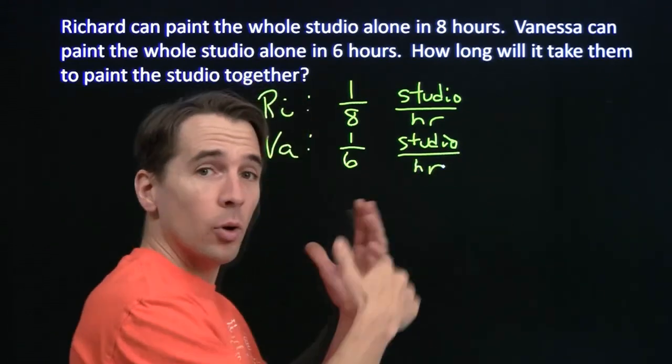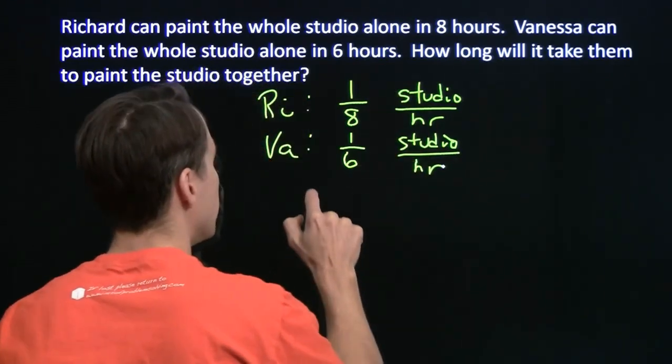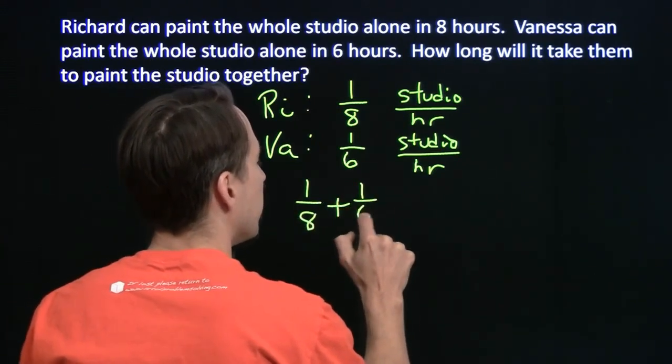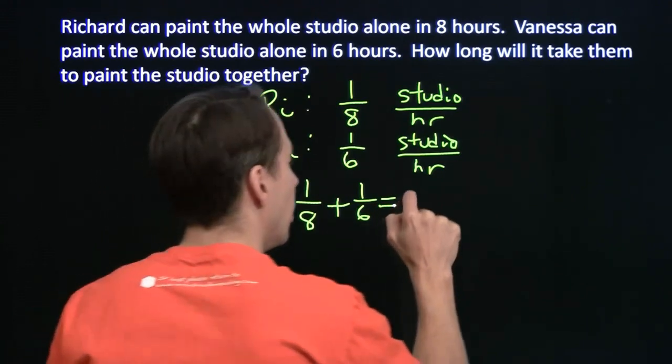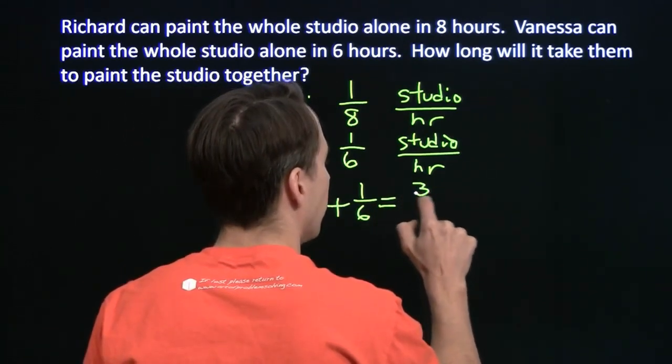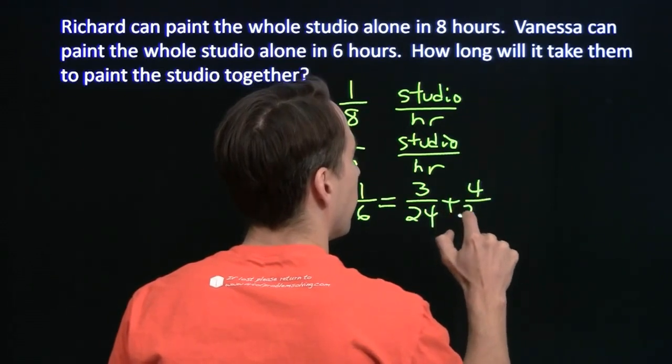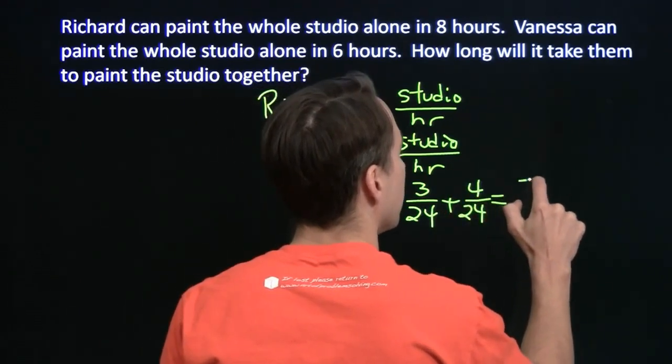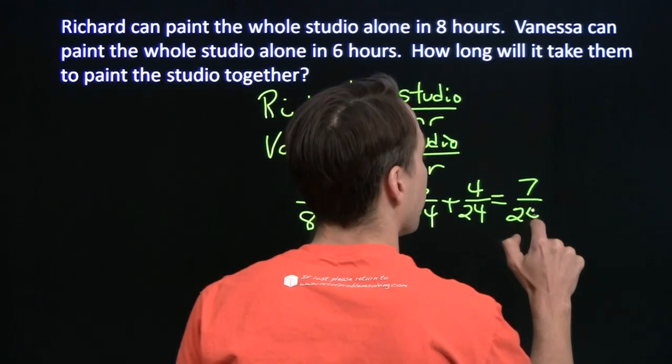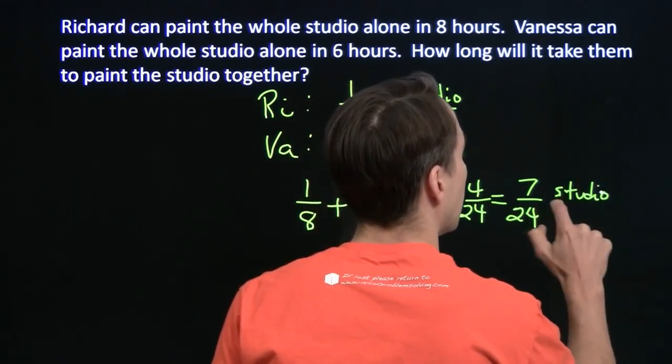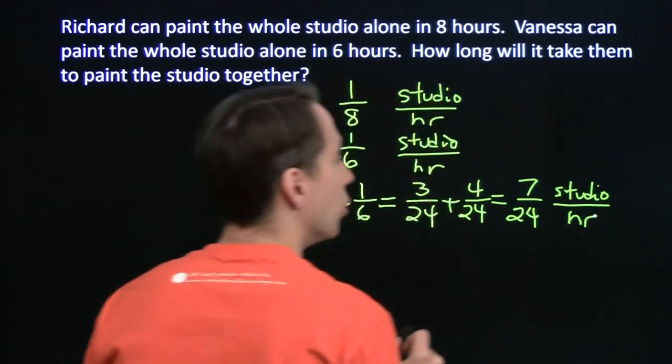So when we work together, we add our rates. I'm going to do one-eighth, she's going to do one-sixth of the studio each hour. So the amount that we'll get done together is one-eighth plus one-sixth. Find a common denominator there. That's 24. 3 over 24 plus 4 over 24. We will knock off seven twenty-fourths of the studio every single hour.